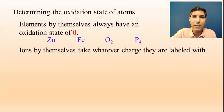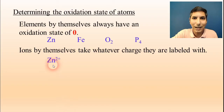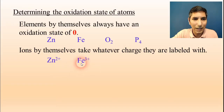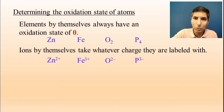When you have an ion that's by itself, it's going to take whatever charge it happens to be labeled with. That zinc ion has a charge of positive two, and we know that because there's a little plus two right there. This iron is a positive three because it says plus three. That oxide is negative two. That phosphide ion is negative three. If at this point you feel this is just too easy — just wait. It does get a little bit harder.